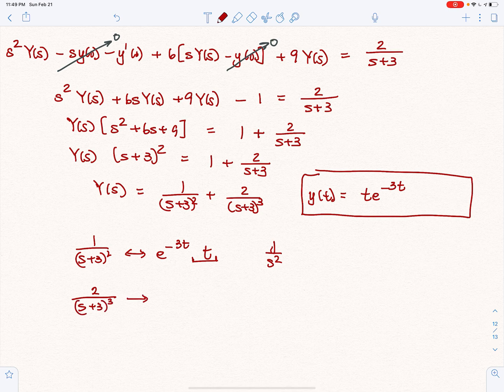2 over S plus 3 quantity cubed, I know, corresponds to e to the negative 3T times something. But what's the function I'm looking at? Well, this is 2 over S to the third.